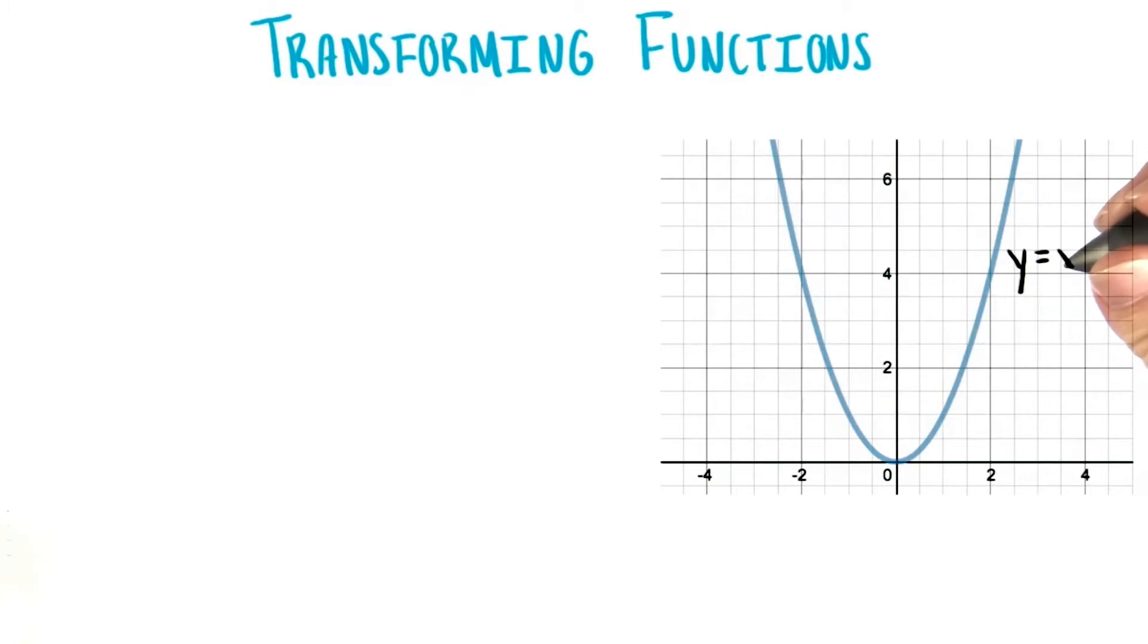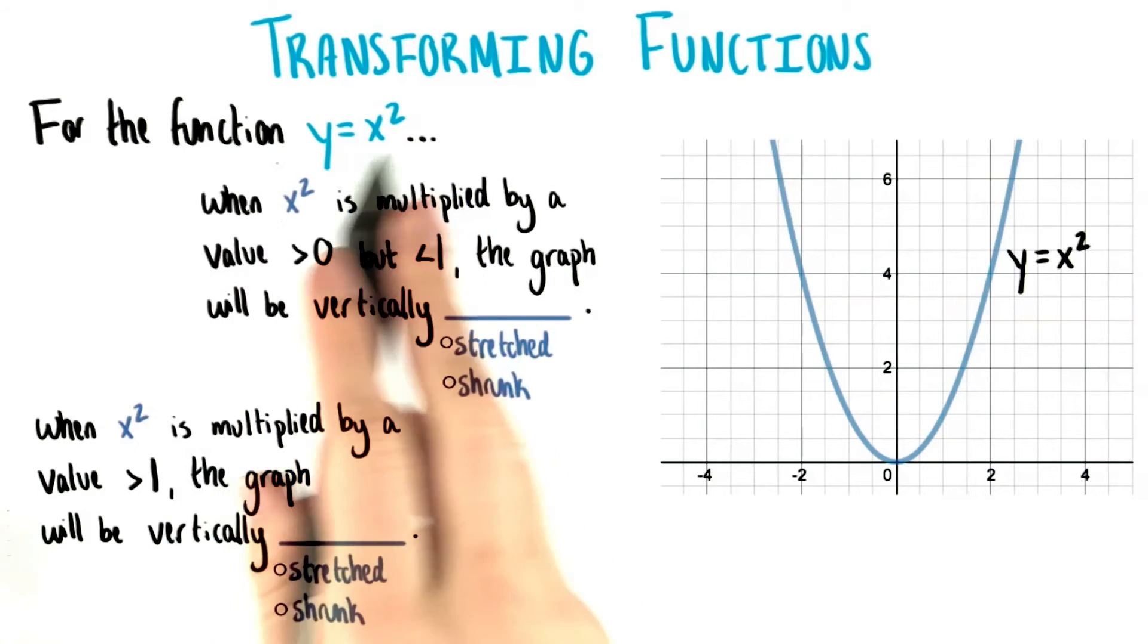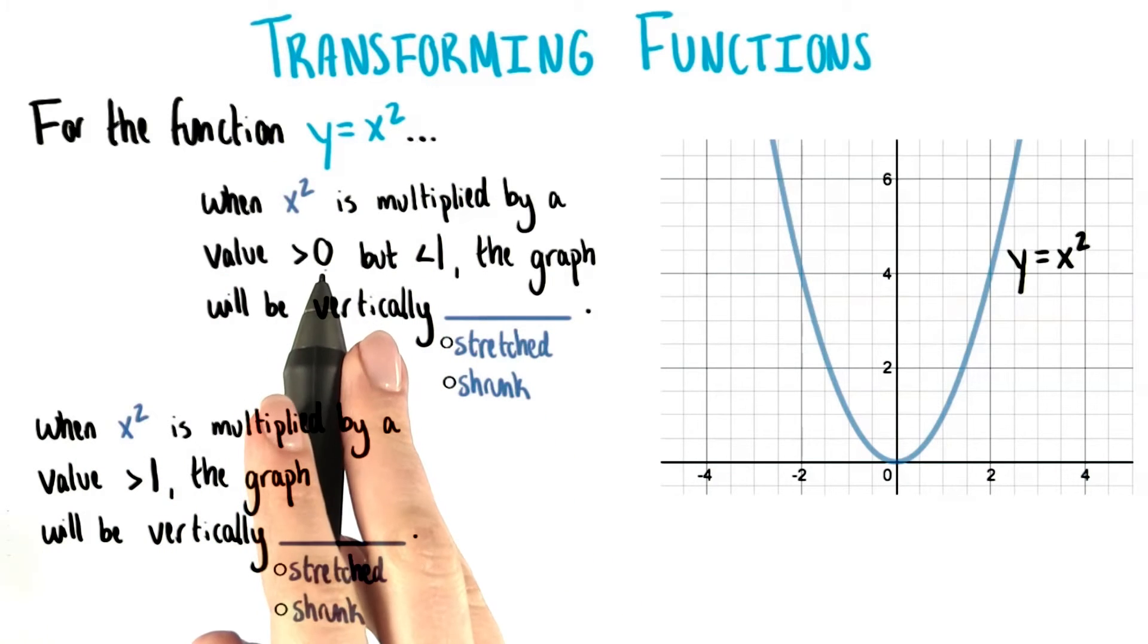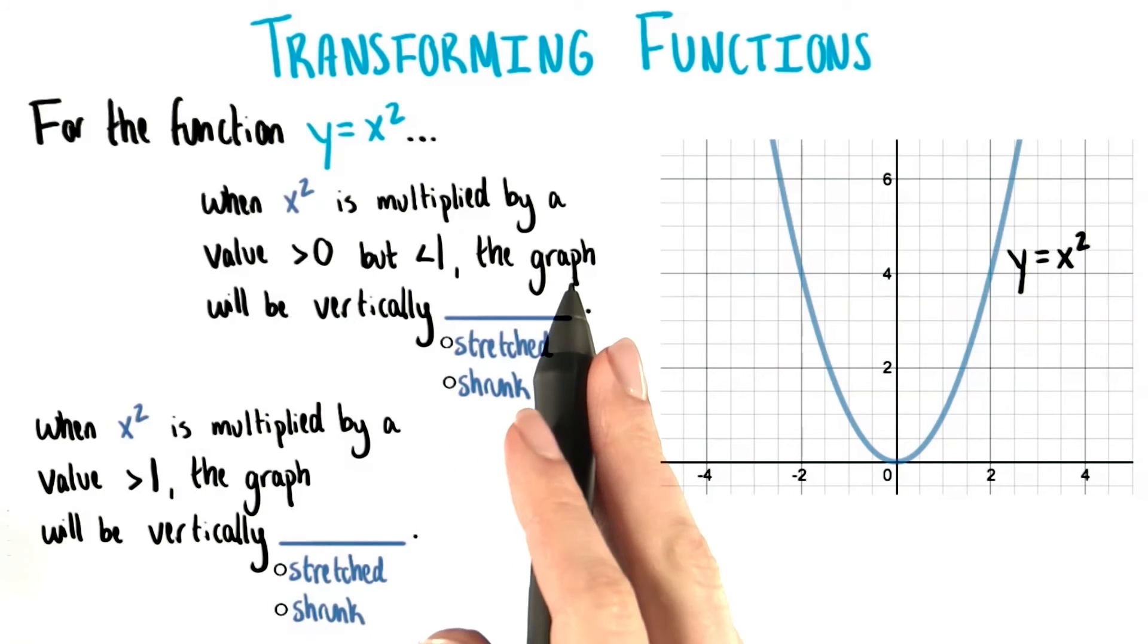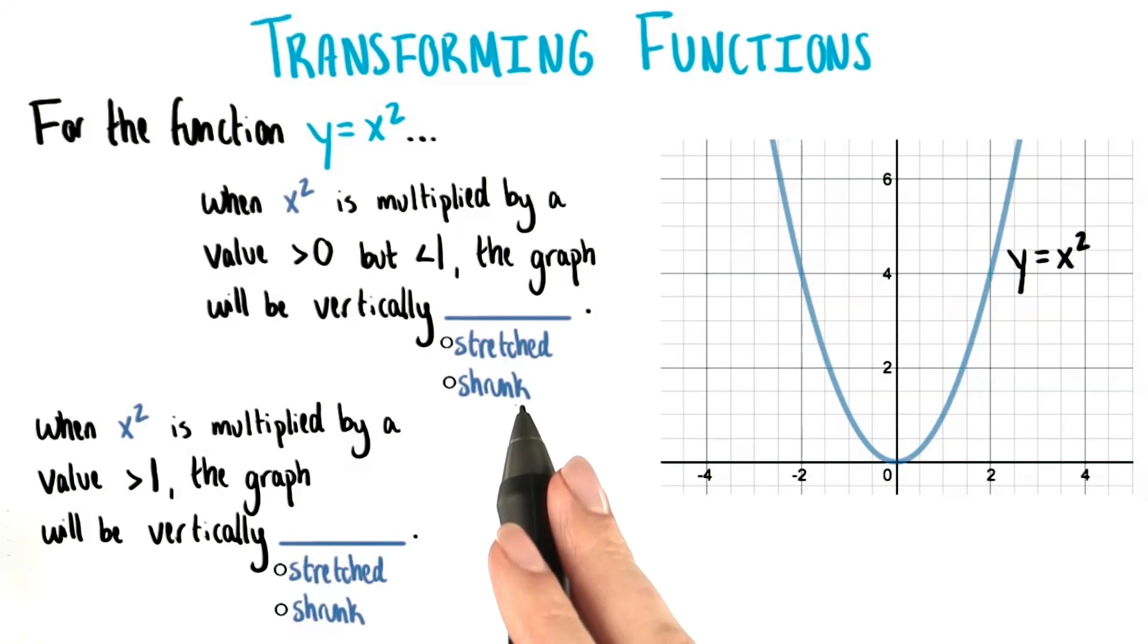Let's use good old y equals x squared as our starting point, the function that we're going to transform. When x squared in this function is multiplied by a value that is greater than 0 but less than 1, will the graph be vertically stretched or vertically shrunk? Now on the other hand, if x squared is multiplied by a value that is greater than 1, what will happen to the graph?